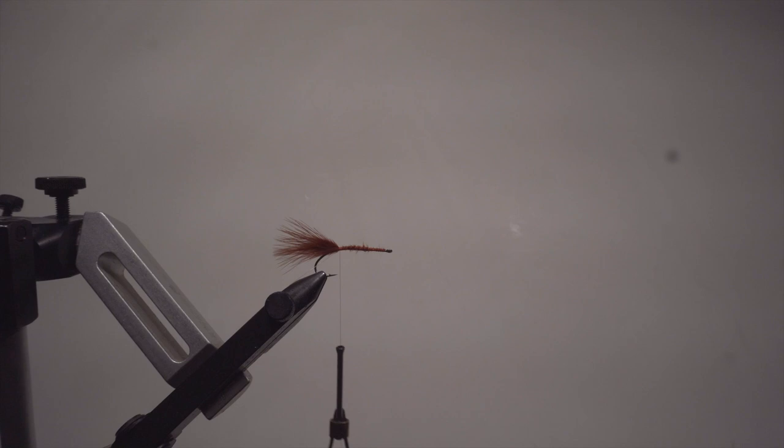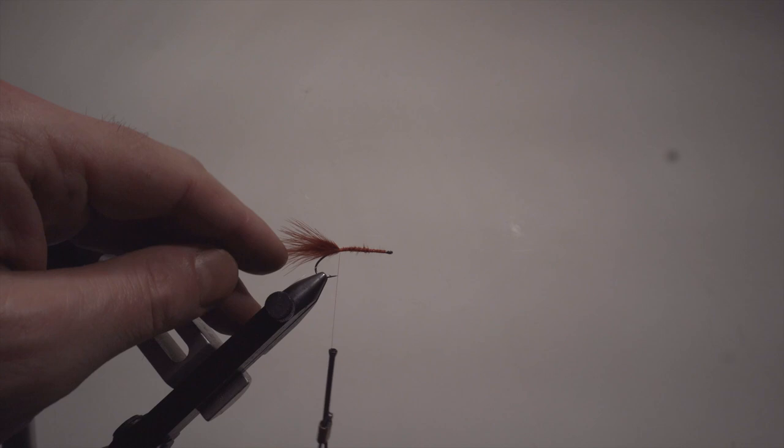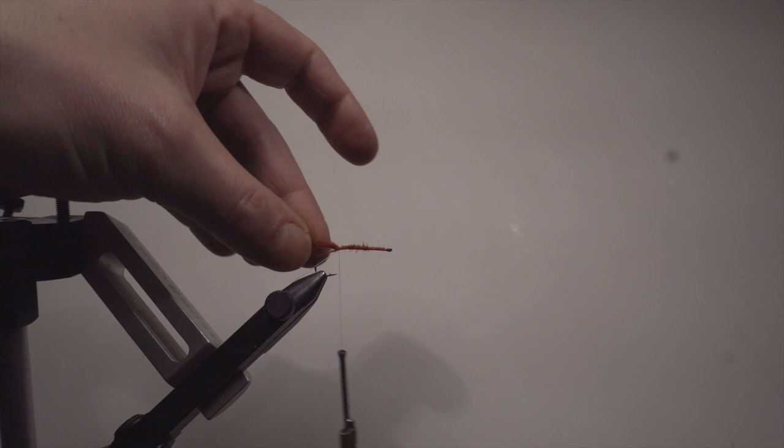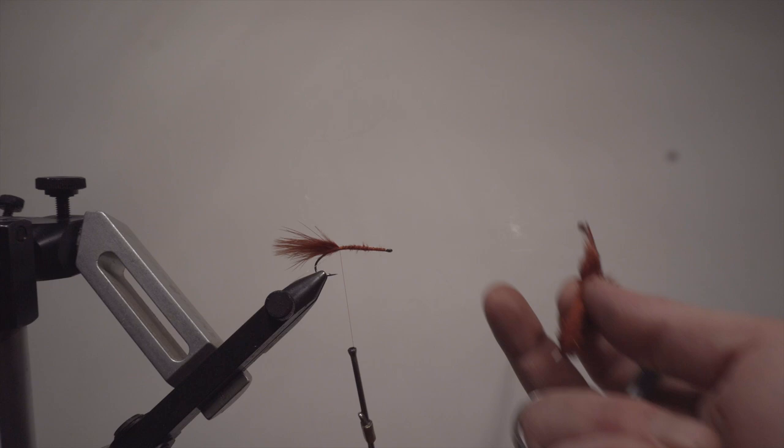For the body hackle on this fly, I'm going to use rooster saddle, fiery brown. And the thing is, I'm attaching everything in reversed order. So ribbing is the last thing I'm going to wrap forward. That's why I'm tying it in first, because it makes everything a little bit easier. The hackle is the second part. And the first thing I'm going to add to the body is, of course, the dubbing, which is the last I will attach in order.